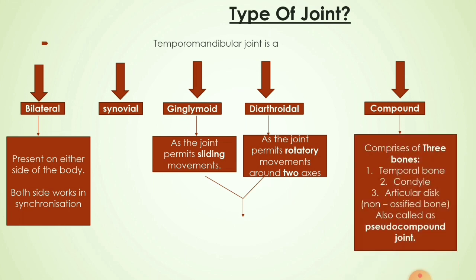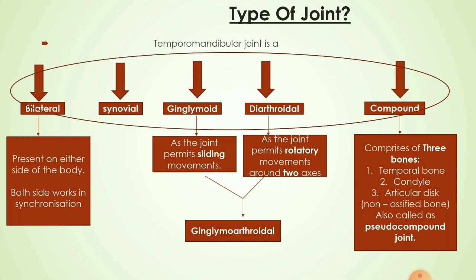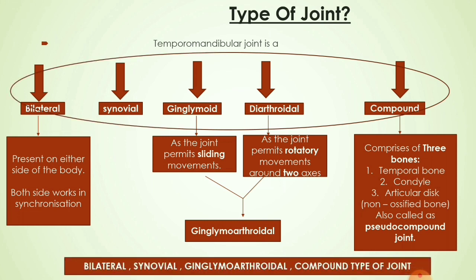Next, it is also a compound joint. A compound joint comprises three bones. In the temporomandibular joint, there is a temporal bone, a condyle, and an articular disc. But the articular disc in this case is a non-ossified bone, hence the TMJ is also called a pseudo compound joint. Ginglymoid and diarthrodial together are called a ginglymoarthrodial joint.